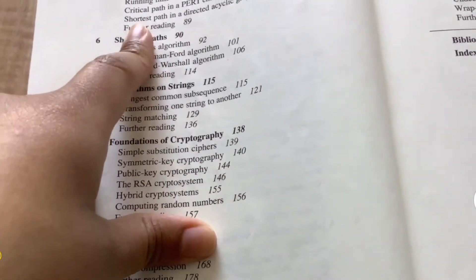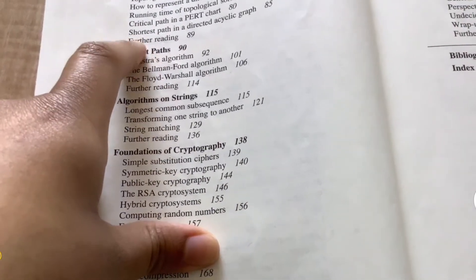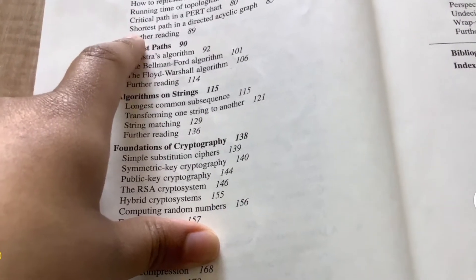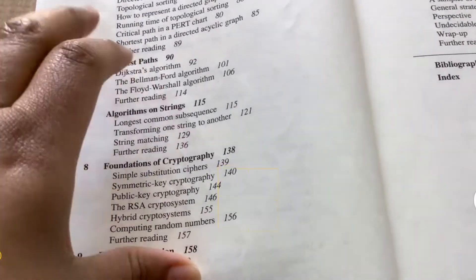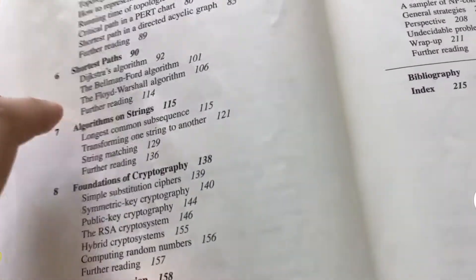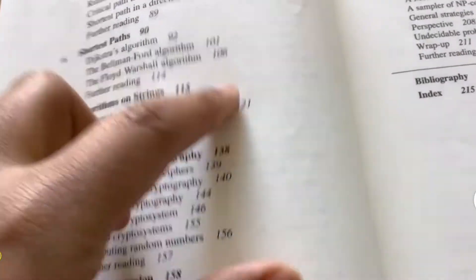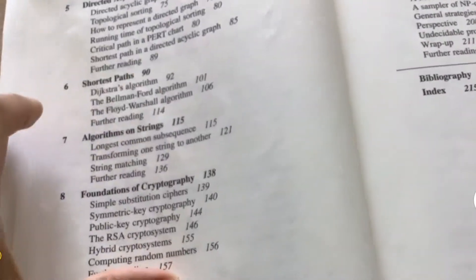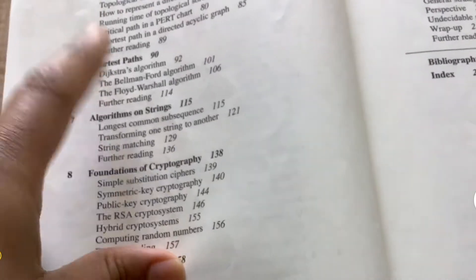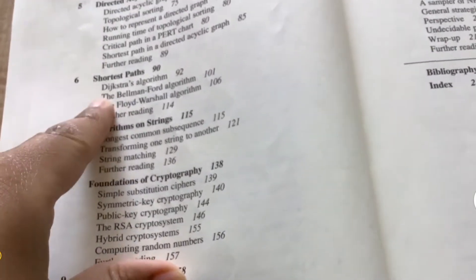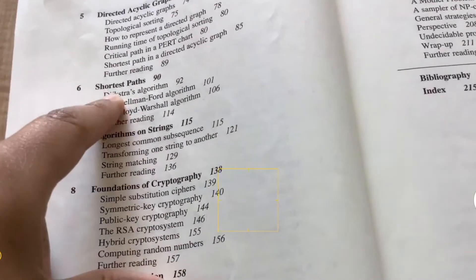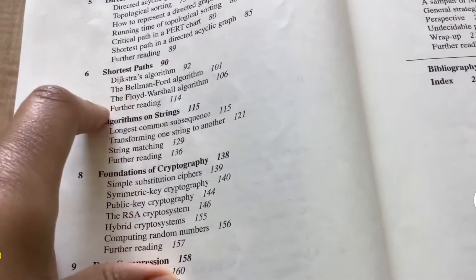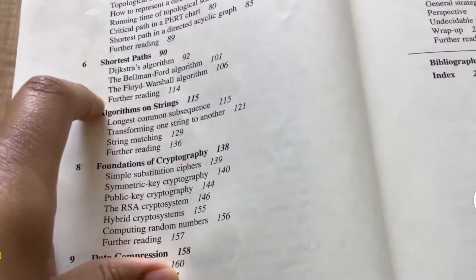But after that shortest path in a DAG, very good explanation as well. And then we go over to chapter six, which covers more of like the shortest path, the popular shortest path algorithms that we know of. So Dijkstra, of course, Bellman-Ford, Floyd-Warshall, again, great read here, very concisely explained. I think those were interesting.